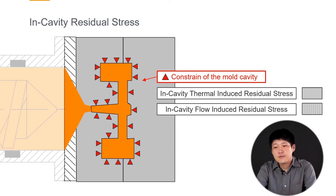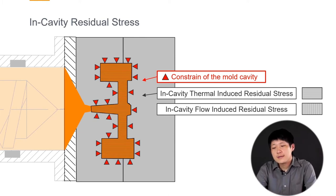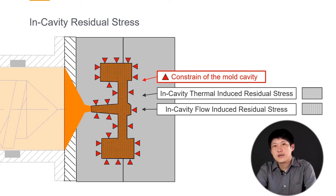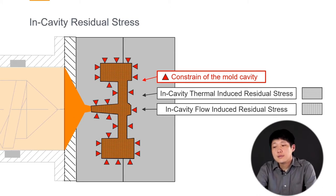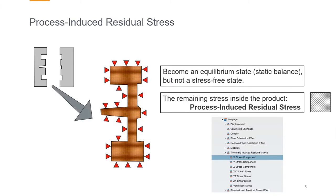There are two kinds of in-cavity residual stress. The first one is called in-cavity thermal-induced residual stress. It depends on your temperature and pressure. The other part of the in-cavity residual stress is called in-cavity flow-induced residual stress. This part comes from the flow field because thermoplastic material is also a kind of viscoelastic material. During the flowing, the polymer chains will be stretched or compressed, so it becomes the in-cavity flow-induced residual stress.